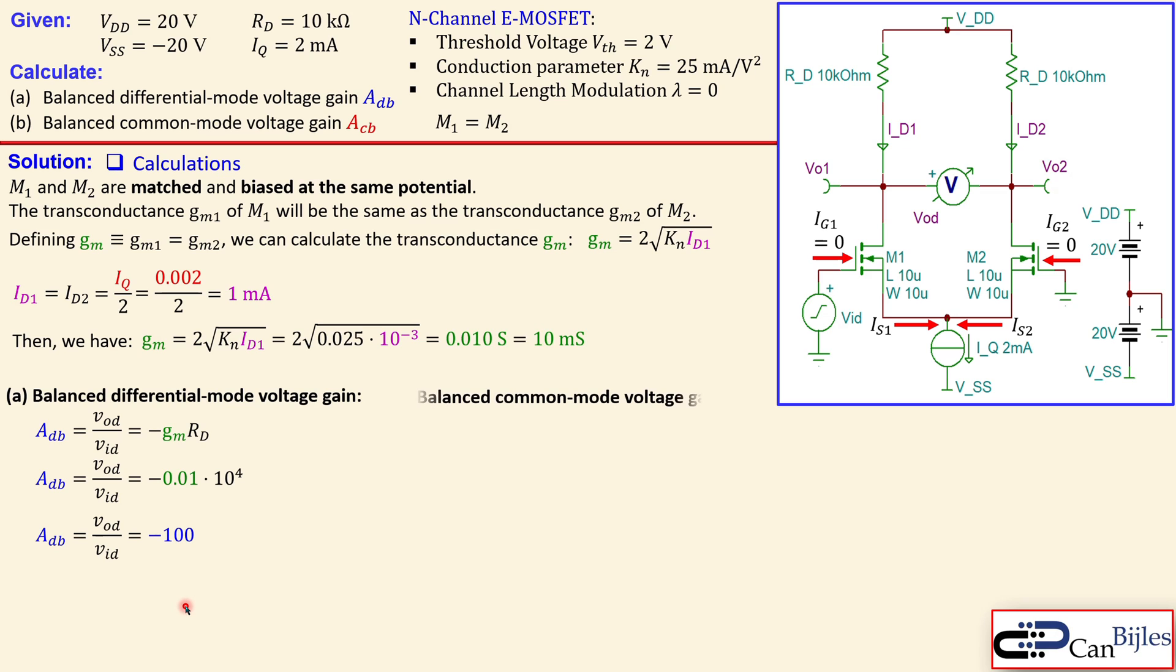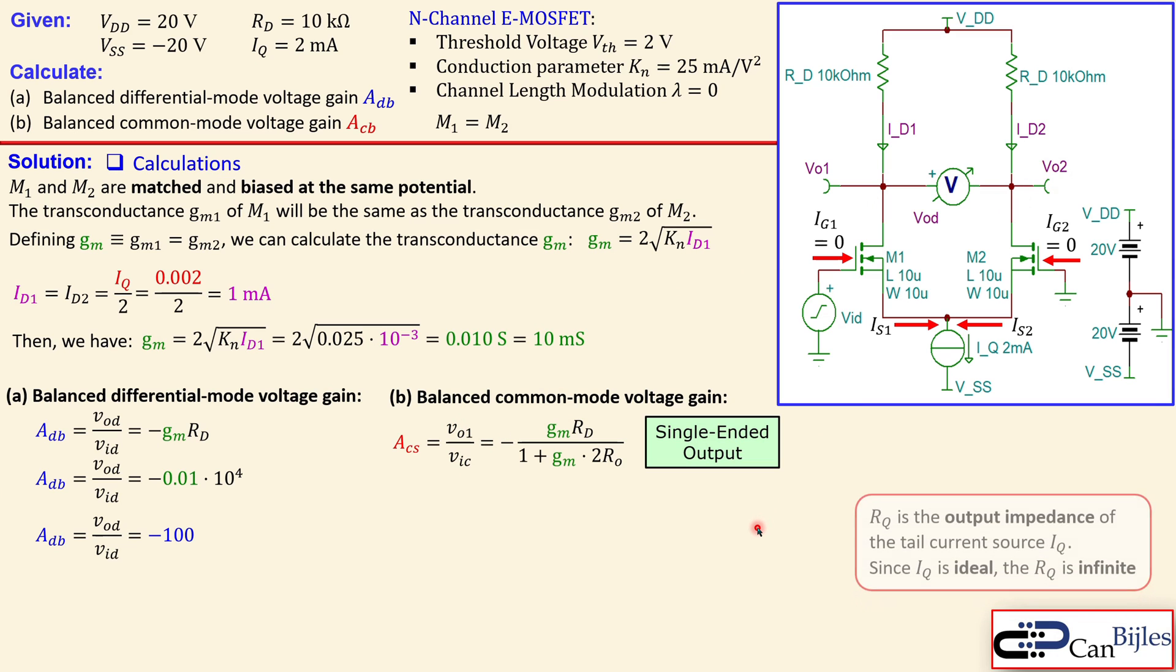The common mode voltage gain, for the single-ended output, will be given by the VO1 over the common mode input. By the way, if you have a common mode input, both inputs are connected together and then connected to one source. This is the formula when you use single-ended output. You can measure at this node or at that node, it doesn't matter, because they are the same.